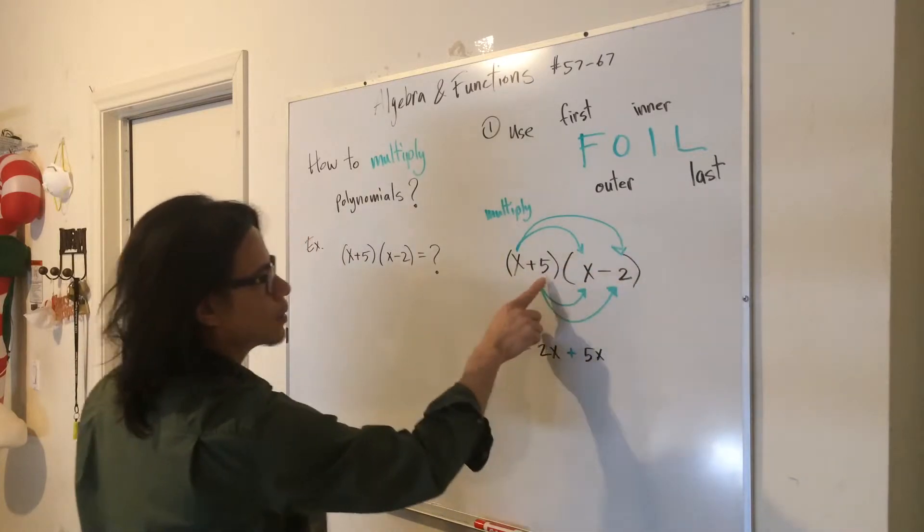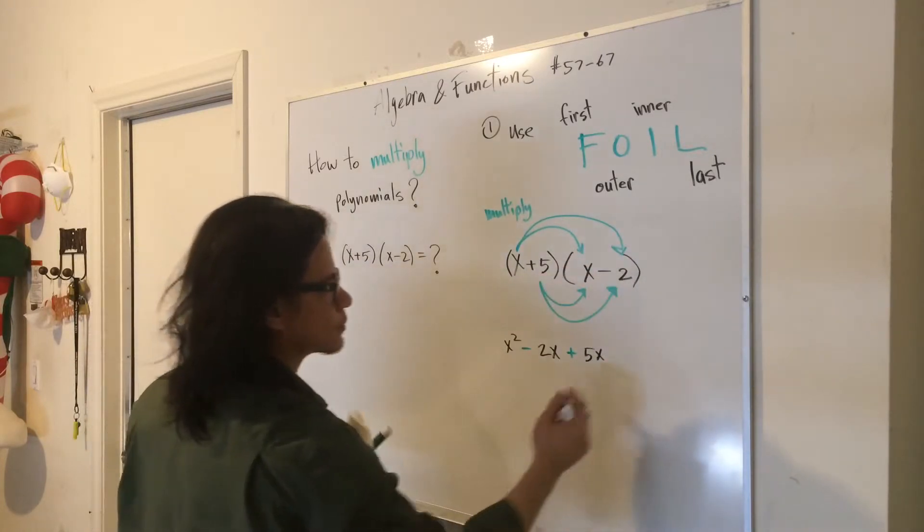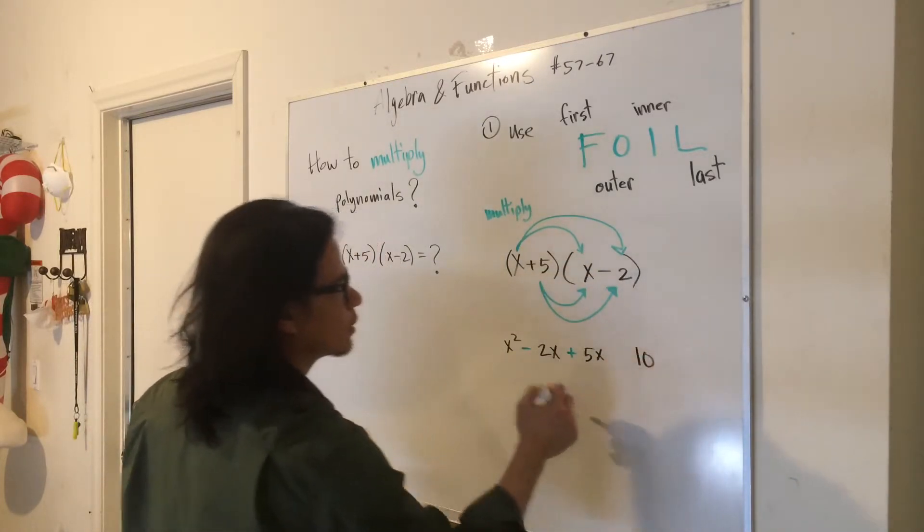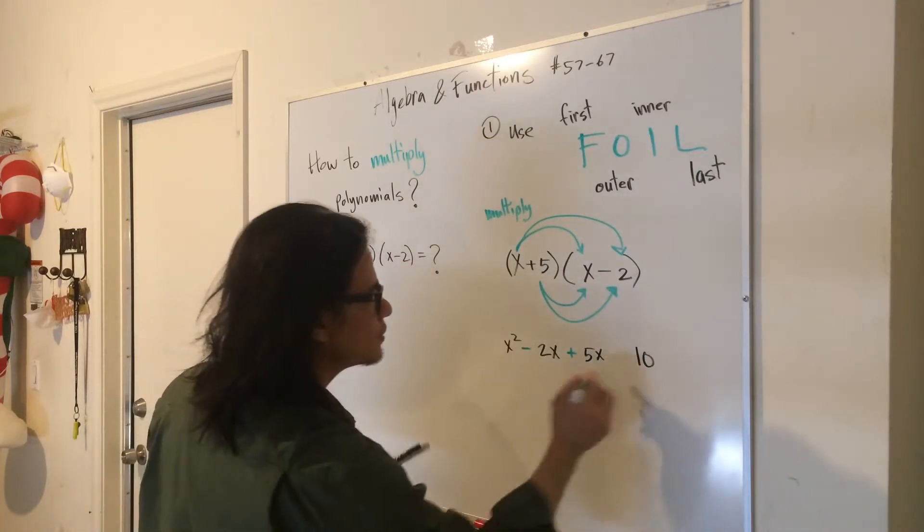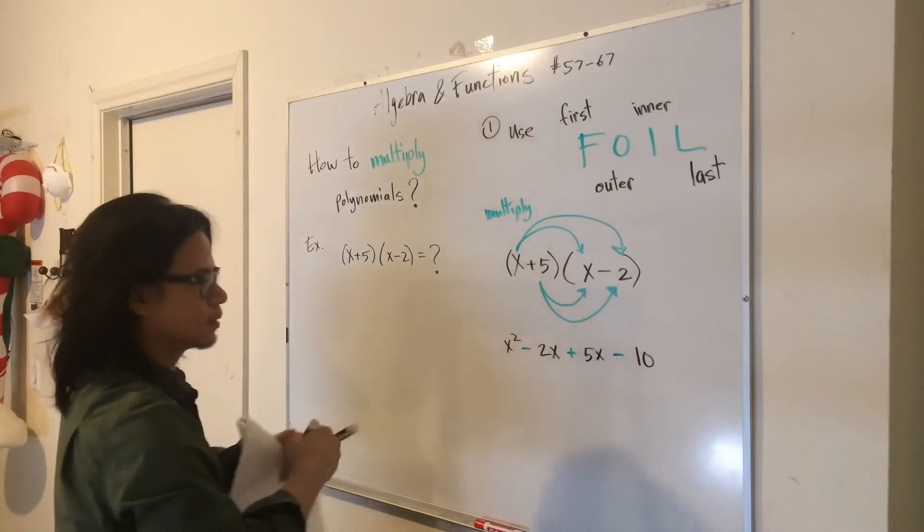Last term, 5 times 2 is 10. Positive times negative is negative.